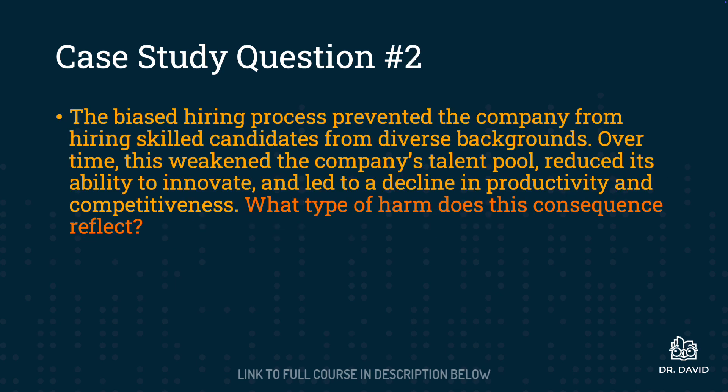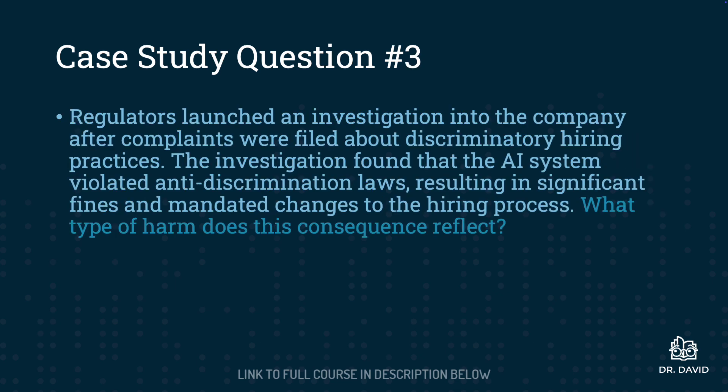Question two is as follows: the biased hiring process prevented the company from hiring skilled candidates from diverse backgrounds. Over time, this weakened the company's talent pool, reduced its ability to innovate, and led to a decline in productivity and competitiveness. What type of harm does this consequence reflect? Finally, case study question three: regulators launched an investigation into the company after complaints were filed about discriminatory hiring practices. The investigation found the AI system violated anti-discrimination laws, resulting in significant fines and mandated changes to the hiring process. What type of harm does this consequence reflect? You're going to have one base scenario, and then questions that build on that base scenario.